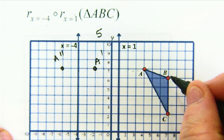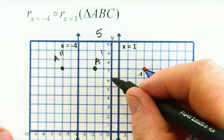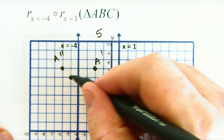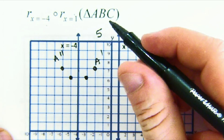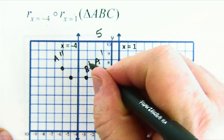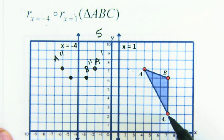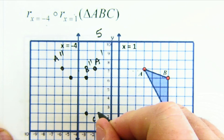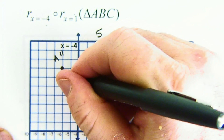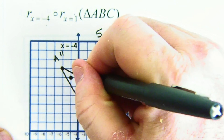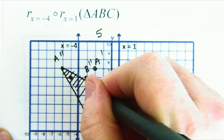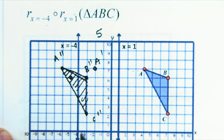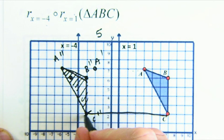Let me do all the points so you can see the full translation. Point b reflects one, two, three, four, five, six — lands here, then reflects back to here, so b double prime is here. Point c lines up with b so it ends up right here. Connecting everything, you can see quite easily the translation that's taken place.